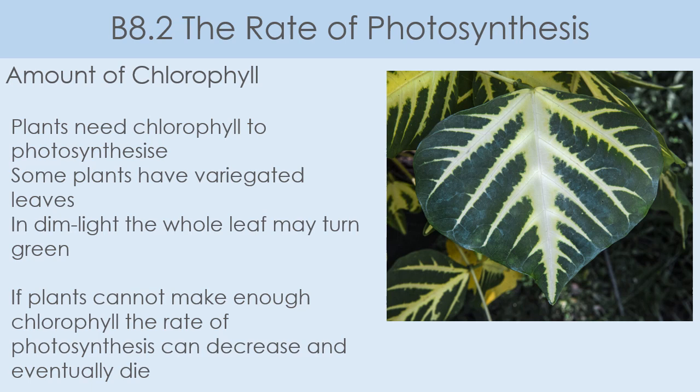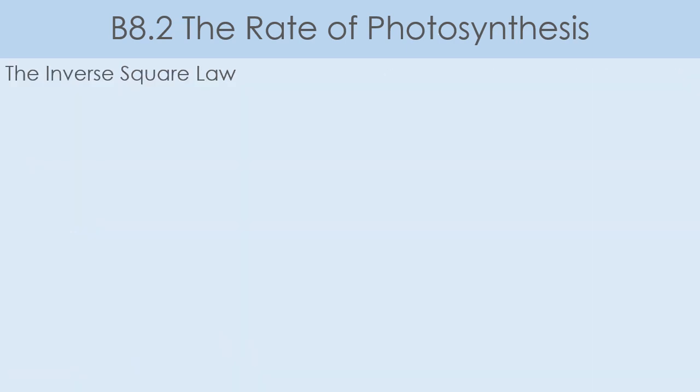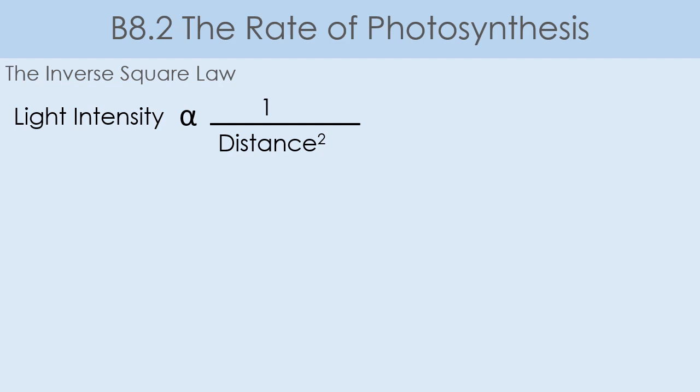For those of you doing higher or triple science, we're going to look at the inverse square law. The inverse square law requires us to use a little bit of mathematics, so we need to understand what it is. For light intensity, the closer a light is to a plant, the bigger the light intensity. As we move the lamp further away from the plant, the light intensity decreases. This doesn't follow a one-for-one pattern — it follows an inverse square law. The light intensity is proportional (that symbol is the Greek letter alpha, the proportionality sign) to one over the distance squared.